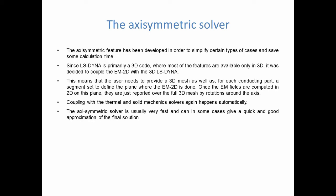Once the EM2D fields are computed, they are simply reported over the full 3D mesh by rotations around the axis. Then it's the same thing. Coupling with thermal and solid mechanical solvers always happens, and it's automatic. Now, the main feature of the axisymmetric solver is that it's very fast compared to the equivalent 3D analysis. And in some cases, since it gives a quick and good approximation of the solution, it can be a good replacement when investigating certain effects, such as using a higher frequency current, or moving the coil around.